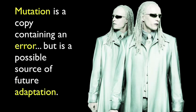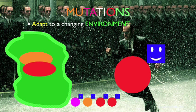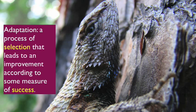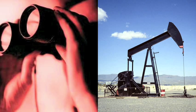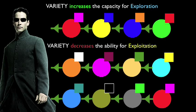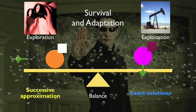A mutation is a copy containing an error, but is a possible source of adaptation. Mutations help agents adapt to a changing environment. Exploitation is the copying of the best proven types. Adaptation is a process of selection that leads to an improvement according to some measure of success. Adaptation and survival are in a seesaw balance of exploration and exploitation. You survive by exploiting your environment, but in the long run you remain alive by adapting through exploration. Variety increases the capacity for exploration but decreases the ability for exploitation. Exploration is the creation of unproven types and obeys the logic of successive approximation — trial and error. Exploitation relies on known solutions, the exact application of knowledge.